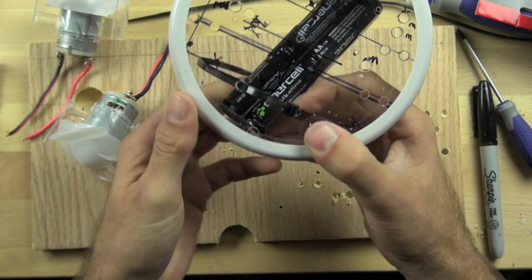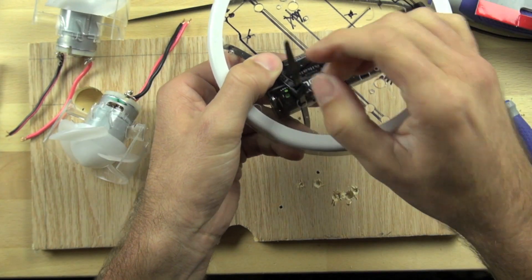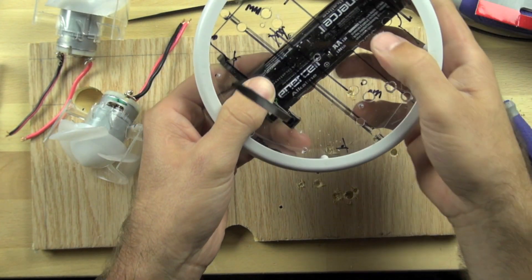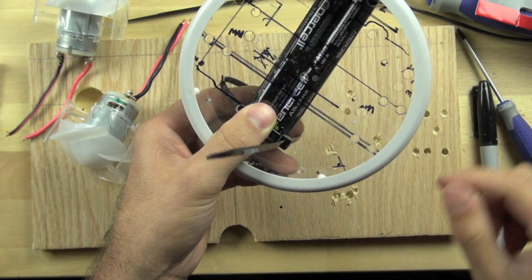As I put this in, I want to make sure that I loop it like this so that the top part is facing upward. That will mean that as I pull this through, it will give it a nice tight fit on the back side.